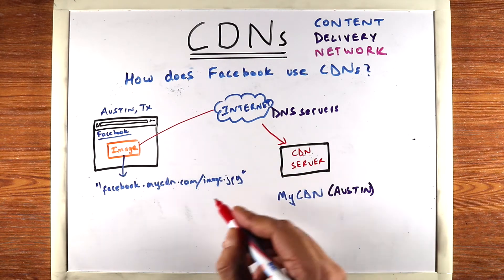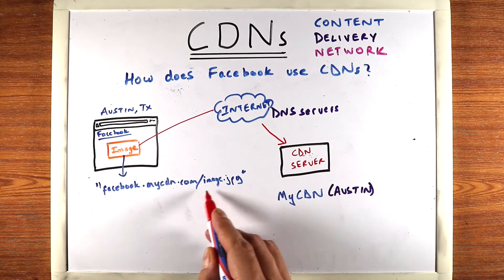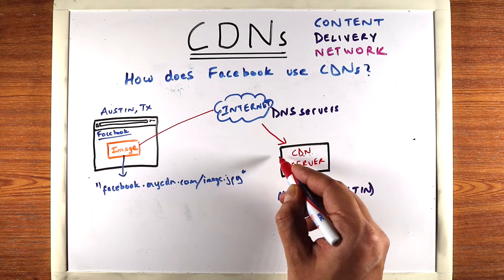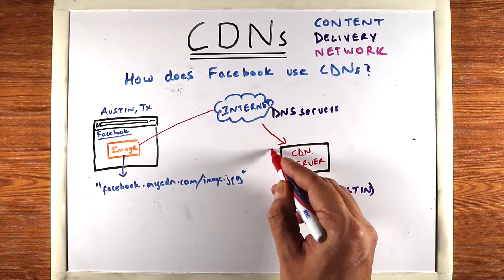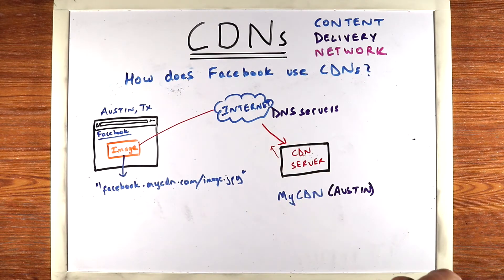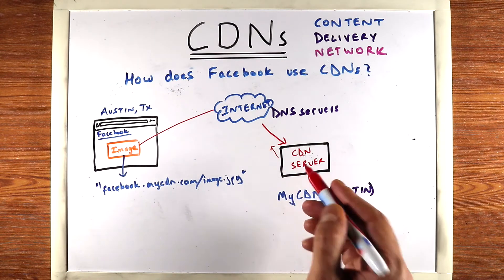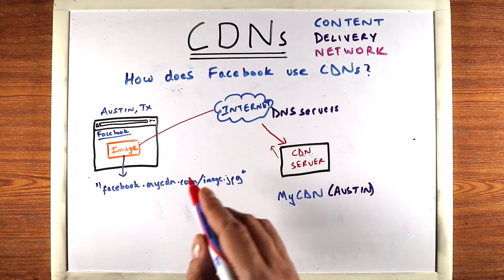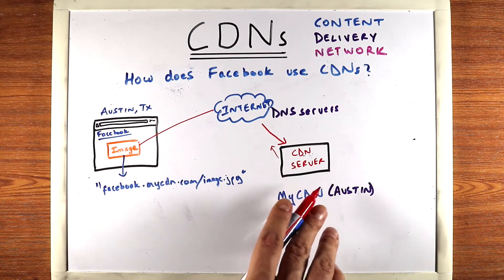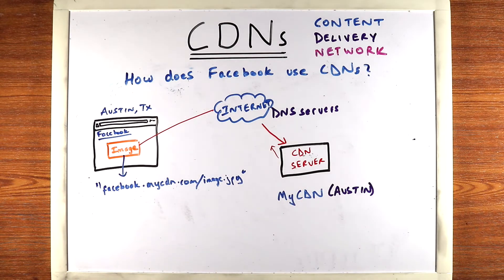If the CDN server already has this image, it'll just return it. This is the ideal scenario where it was cached before, so the user will get the image from a local Austin server.